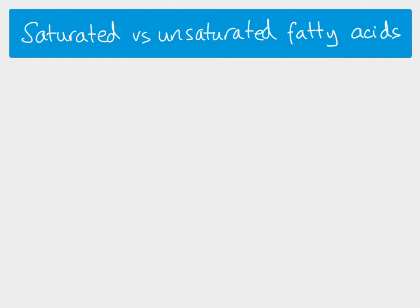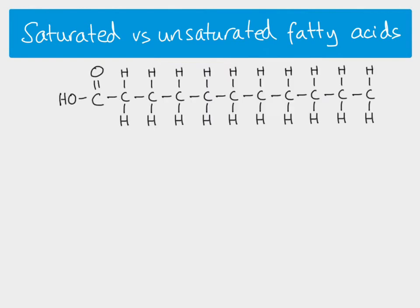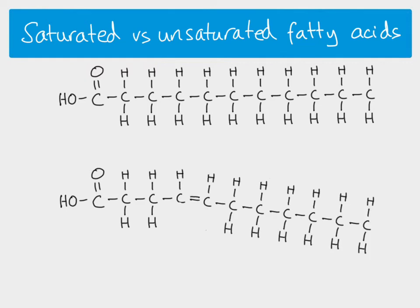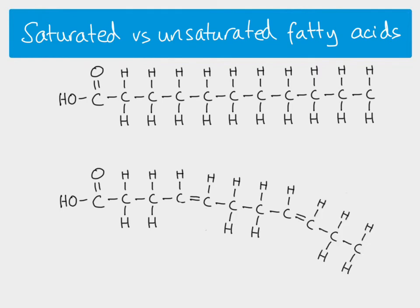Let's think in more detail about saturated and unsaturated fatty acids. A saturated fatty acid has no double bonds and is completely straight. Adding a double bond makes it unsaturated and creates a kink. Adding another double bond — making it polyunsaturated — causes another kink. The more unsaturated a fatty acid is, the less straight it is and the more kinks you get.